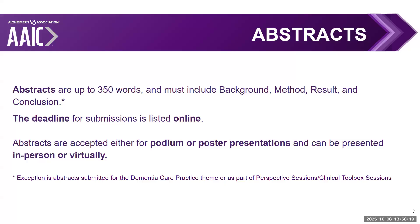When you're thinking about submitting your scientific content to AAIC, you want to structure it in a very specific format in order for it to go through the review process. Abstracts to AAIC are around 350 words and should include the background, method, results, and a conclusion.